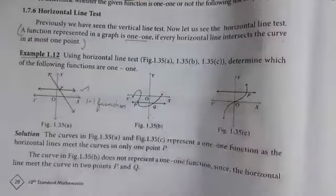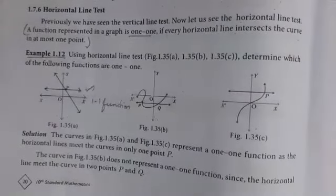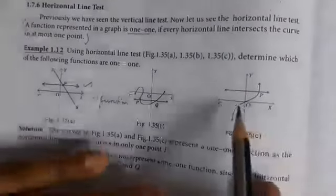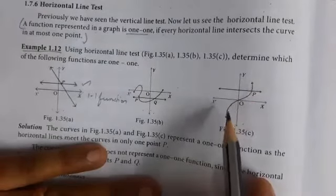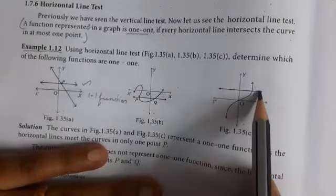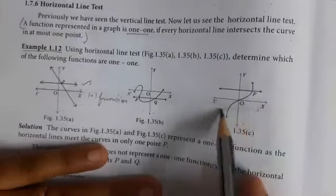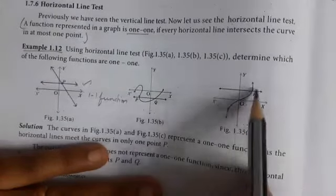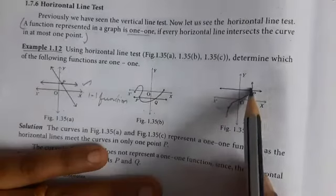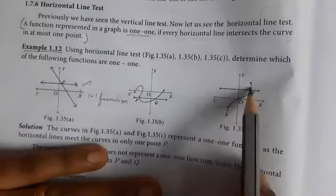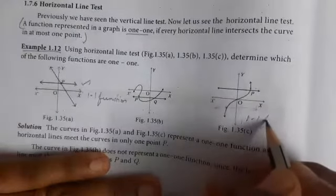Now see the third diagram. Your graph is like this. If you draw a horizontal line anywhere, you will get only one point. Therefore, this is a one-one function.